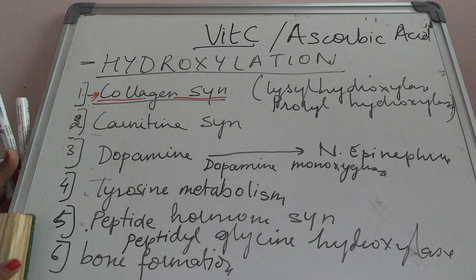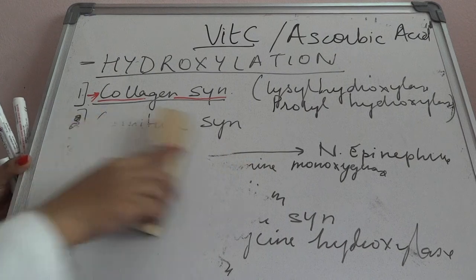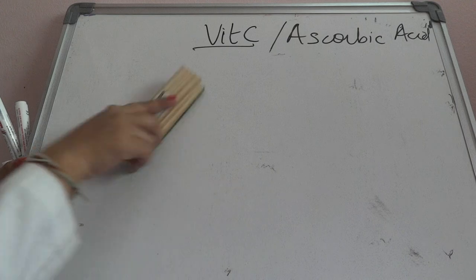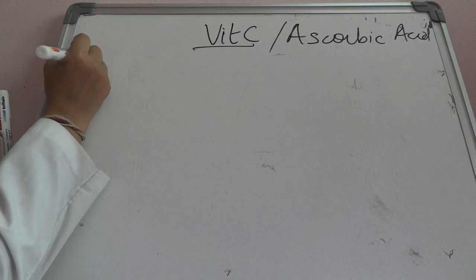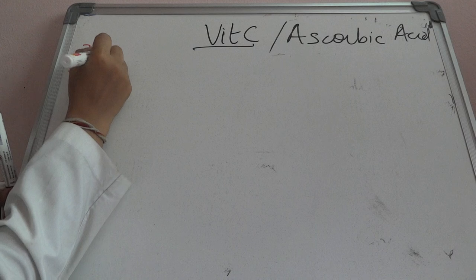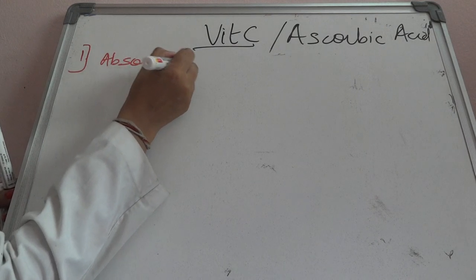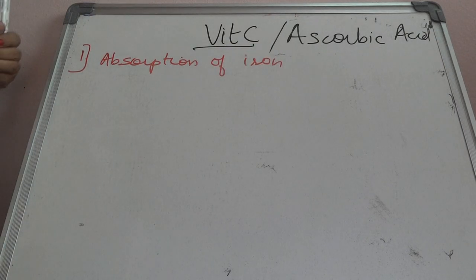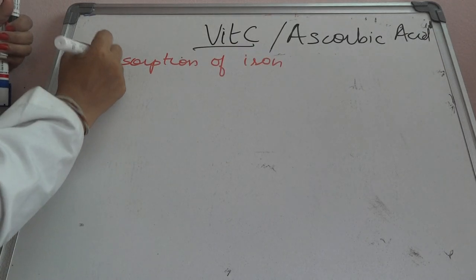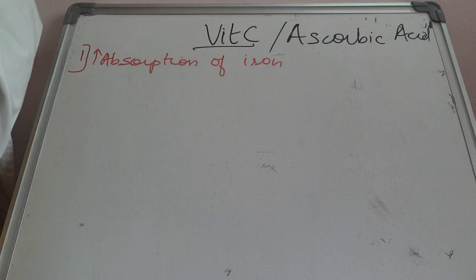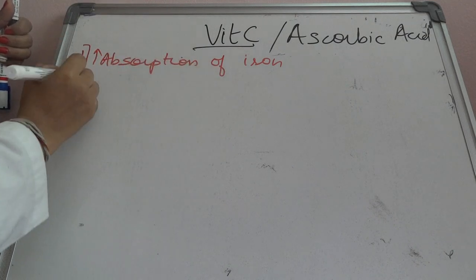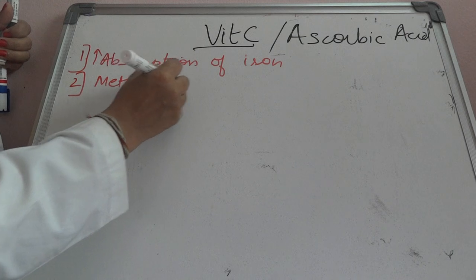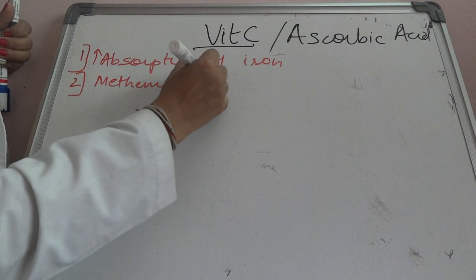Coming to the physiological roles of vitamin C: these involve all the hydroxylation reactions occurring in the body. First, vitamin C is important in the absorption of iron — when vitamin C intake increases, there is increased absorption of iron. It also converts methemoglobin to hemoglobin.